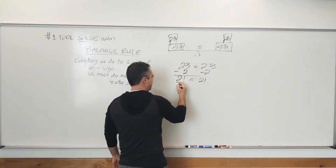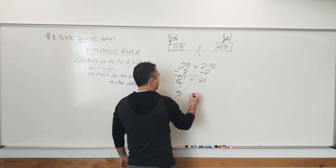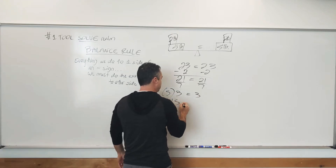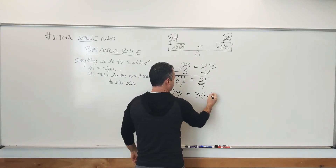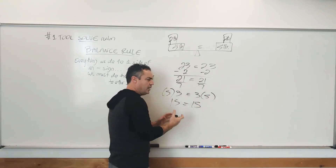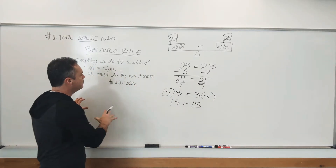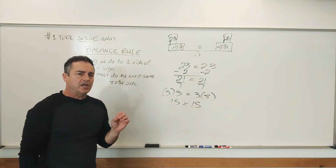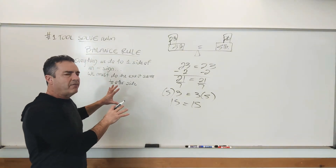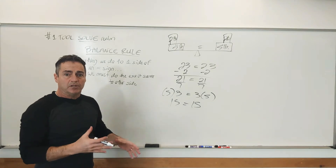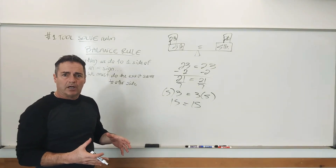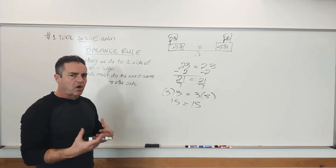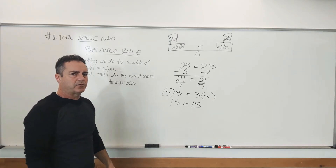If I divide this side by 7, I'll get 3, but 3 does not equal 21, so I've got to divide this side by 7. If I multiply this side by 5, I get 15. 15 does not equal 3, but if I multiply this side by 5 I get 15, and on and on we go. The balance rule is a very simple rule. That is how this rule governs everything we do to solve problems, by doing the same thing to both sides of the equal sign.